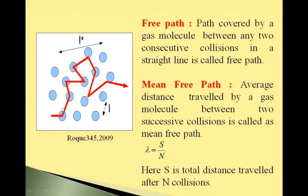Between any two successive collisions, suppose one collision is here, second collision is here. Between these two successive collisions, the path is straight line. This path is called free path. Path covered by gas molecule between any two consecutive collisions in a straight line is called free path.